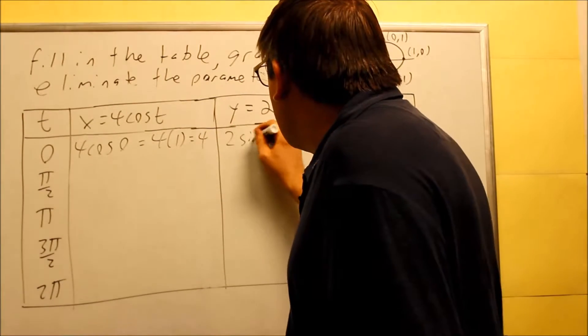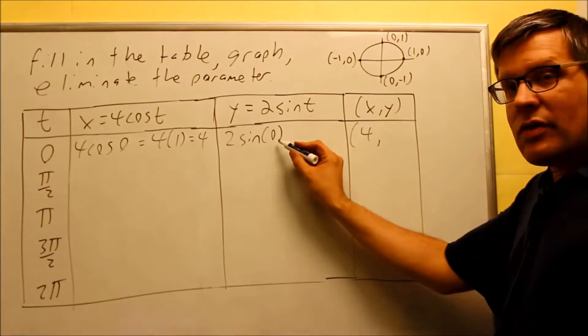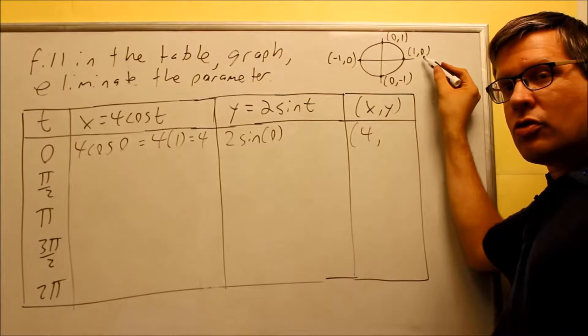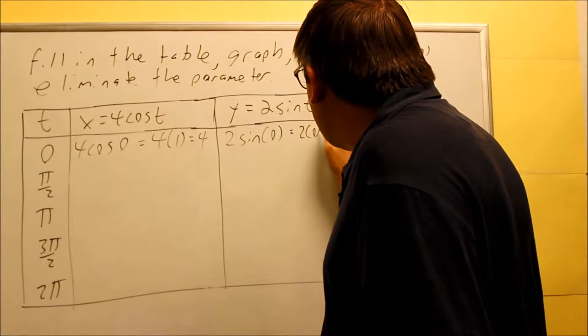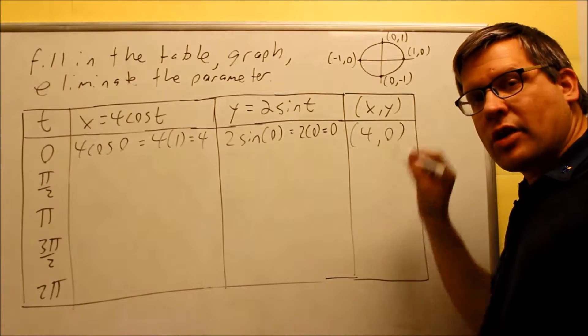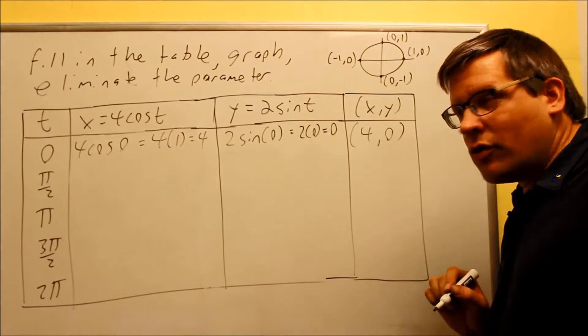Next, I'm going to do 2 times sine of 0. Okay, so we have the same spot on the unit circle. That's the 0 degrees, that's right here. But this time, you're going to refer to the y-coordinate there, and the y-coordinate there is 0. So you're going to do 2 times 0, and you get 0 there. So now, you get (4, 0). That's the first point that we're going to be actually plotting when we get to the graph for this here in a second.